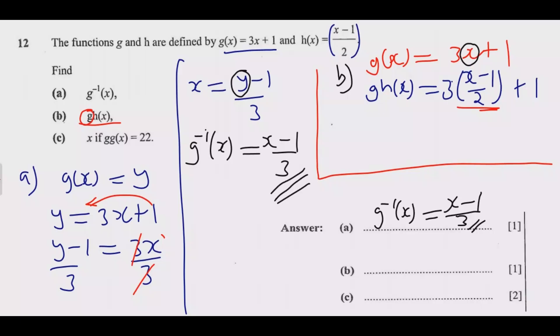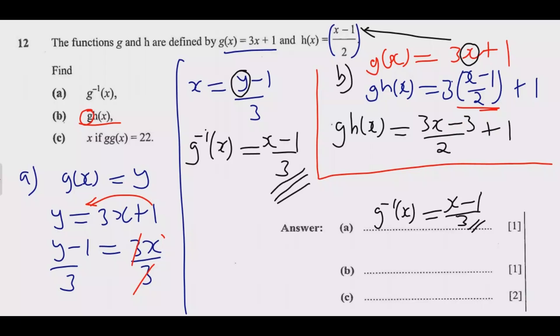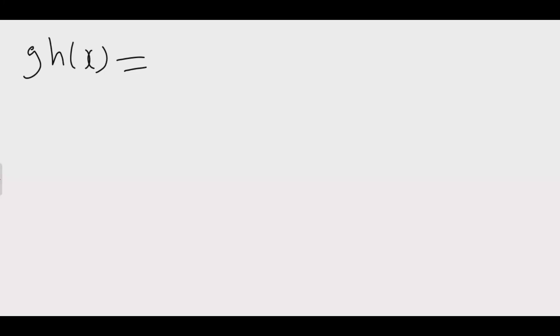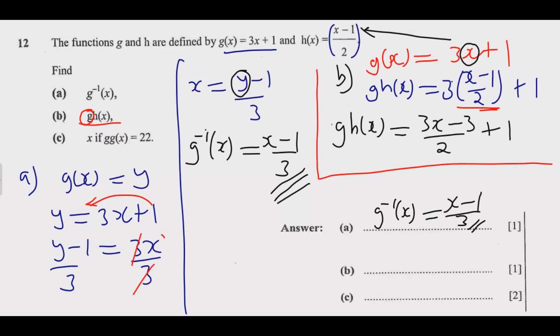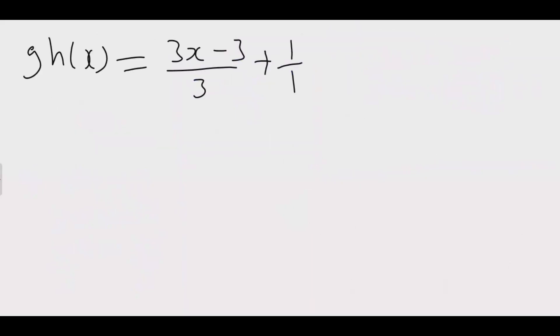This part — x minus 1 over 2 — is replacing x in g. So g of h of x equals 3 times (x minus 1 over 2) plus 1, which gives 3x minus 3 over 2, then plus 1. We look for the common denominator to simplify. Writing it properly: g of h of x equals 3x minus 3 over 2 plus 1 over 1. The common denominator is 2.